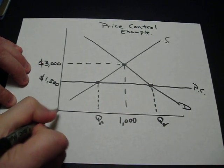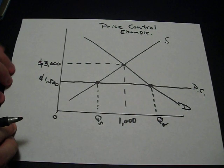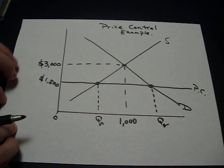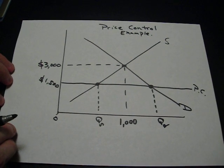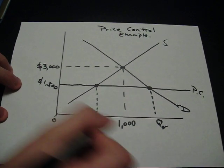Now which one's greater? If zero is back here, quantity demanded is greater than quantity supplied. So that means that consumers want to buy more than what's available. That's the definition of a shortage.